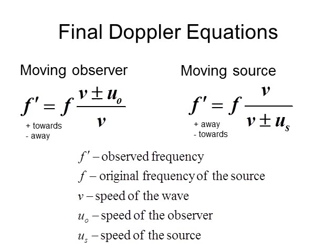Here is a summary of all four equations as written in your yellow packet for the IB test. They give you two equations — one for moving observer (using U-sub-O) and one for moving source (using U-sub-S). You can find these in Option A of your yellow packet.